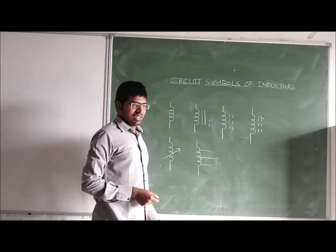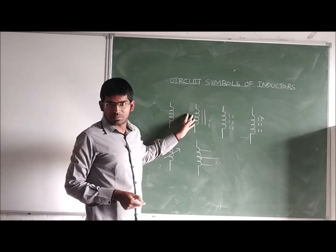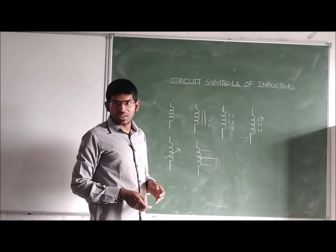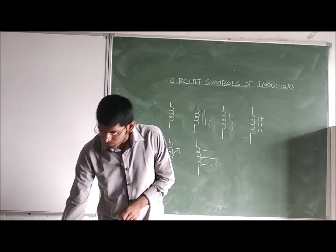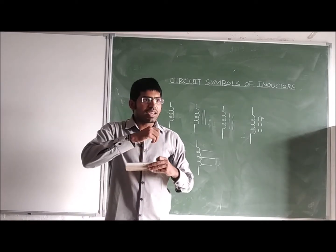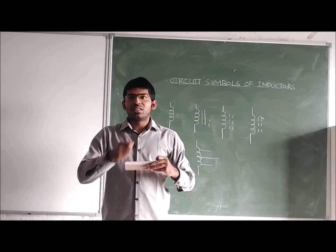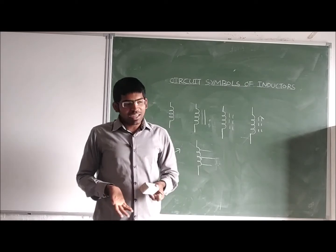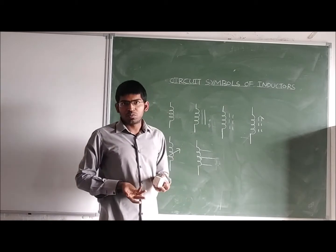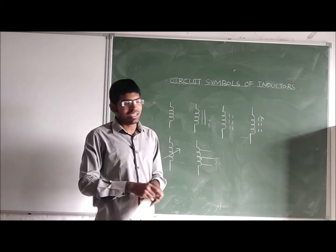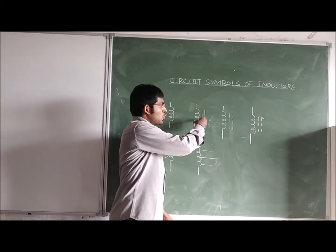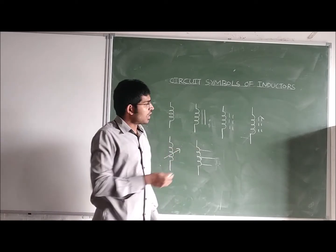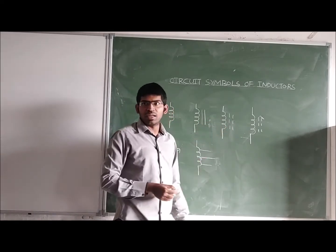If we draw two parallel lines, this is called an iron core inductor. We take an iron material and wind a wire on it — that is the iron core inductor. In the diagram it is very difficult to show, so we represent it with two parallel lines to always indicate an iron core inductor.